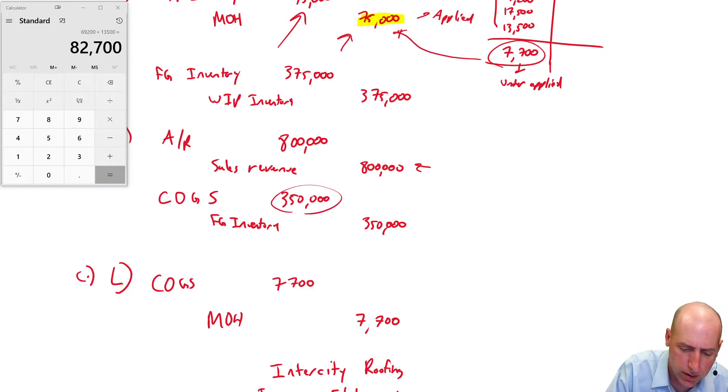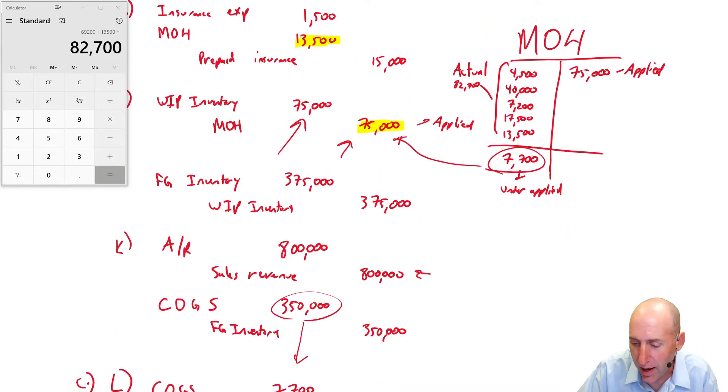Now, knowing how a merchandise, somebody that sells inventory, their income statement is always going to look the same at the top. Sales minus cost of goods sold equals gross profit. Sales minus COGS is gross profit. So let's deduct our COGS. What are our COGS? Our COGS, we initially thought they were $350,000, but we just adjusted that by $7,700.